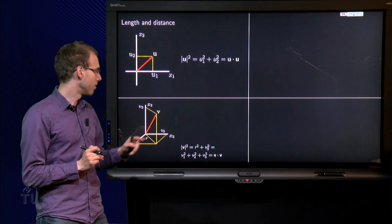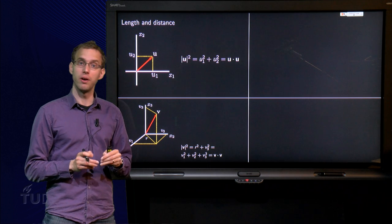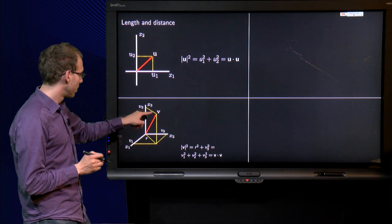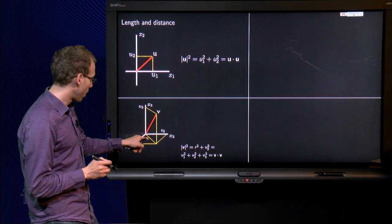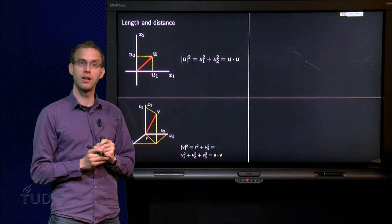So what is the length of this vector v? Well, this is Pythagoras two times. The length over here is squared. The length of v squared equals r squared plus v3 squared, like that.